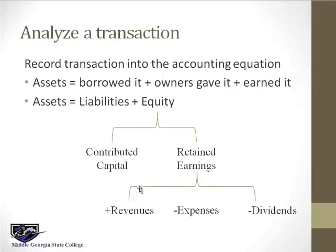Retained earnings can be broken out into three parts: revenues — what you sold to customers; expenses — resources that you used up in providing those services to customers; and dividends. Revenues less expenses give you profit, income, or earnings. Dividends are the return of profit to the owners, so dividends are not retained. Retained earnings is all the earnings less the earnings that were not retained.